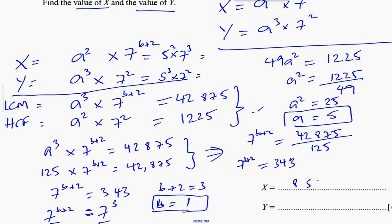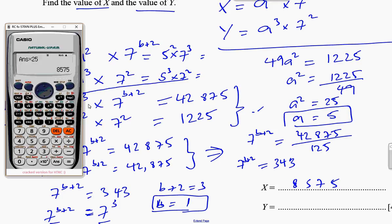And for Y, we're going to have 5³ times 7², which is 125 times 49, so 125 times 49 equals 6,125. Those are the two numbers which have those as a LCM and a HCF.